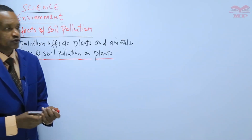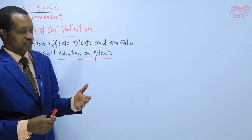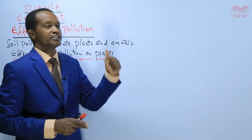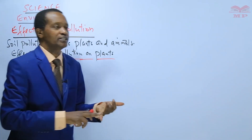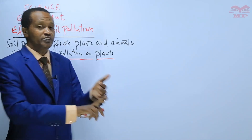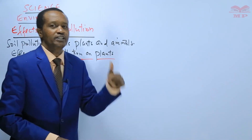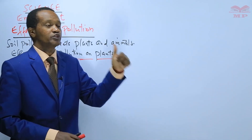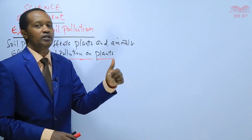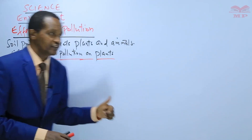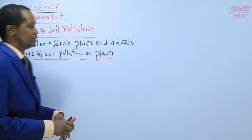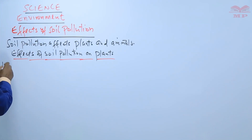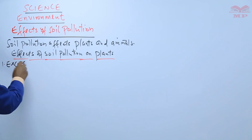Effects of soil pollution on plants. Learners, excessive or improper use of fertilizers and agricultural chemicals such as herbicides, pesticides, and artificial fertilizers affects plants negatively. These chemicals contain substances that interfere with the composition of soil, leading to stunted growth and poor productivity in plants.